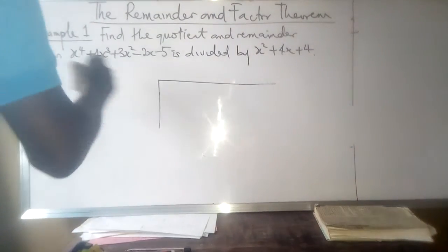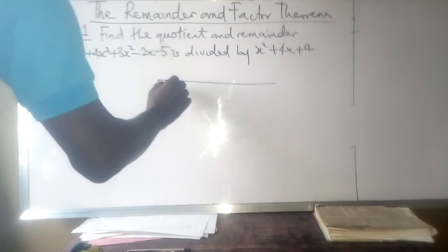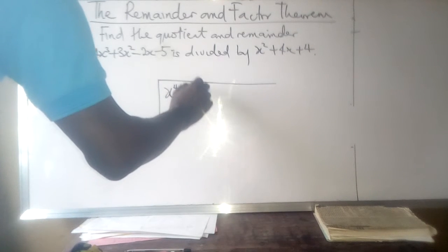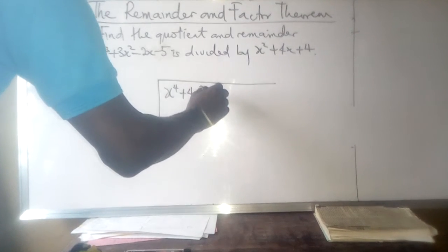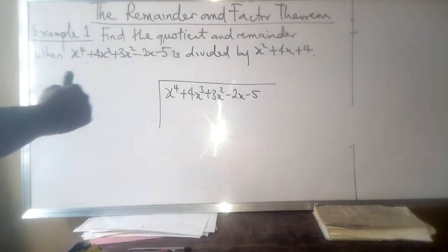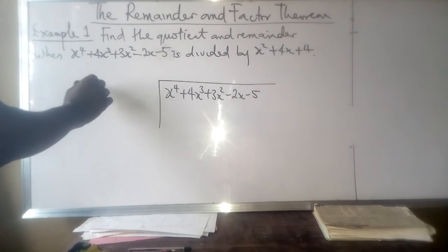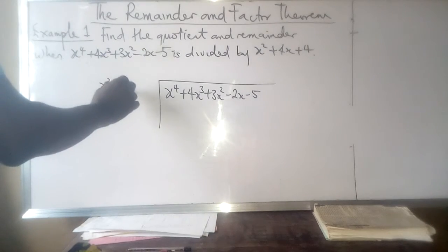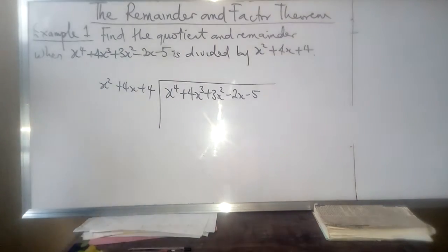The function is x⁴ + 4x³ + 3x² - 2x - 5, and the divisor is x² + 4x + 4. So how do we go about this?